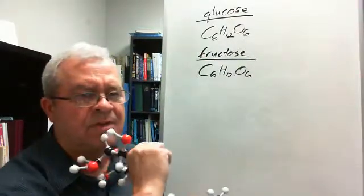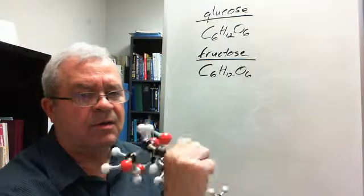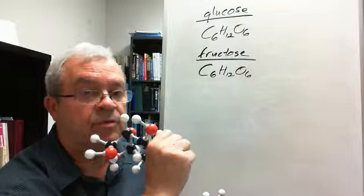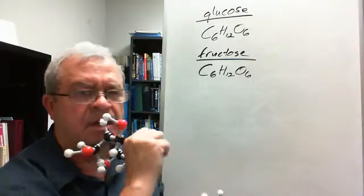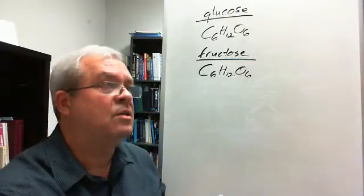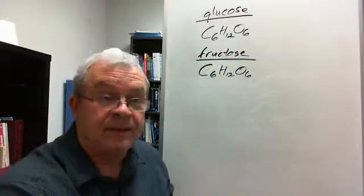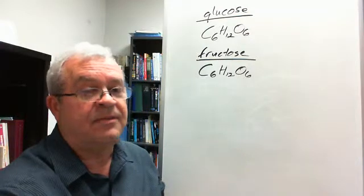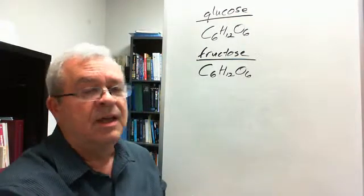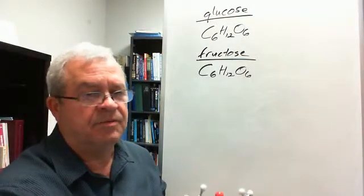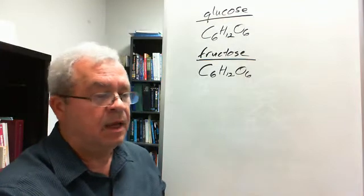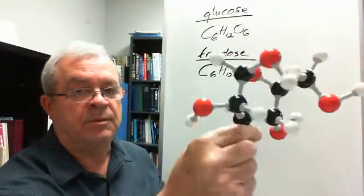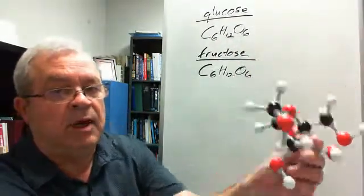The same number and kinds of atoms hooked together two different ways. You might think, who's doing all this hooking together? Well, they're hooked together on assembly lines. Assembly lines? Yeah, in factories. In factories? Yeah. Let's see, what are those factories called? Oh, they're called cells. Yes, every cell is a factory that manufactures lots and lots and lots of different kinds of molecules. And it so happens some factories specialize in putting together these atoms this way, and some put it together this way.